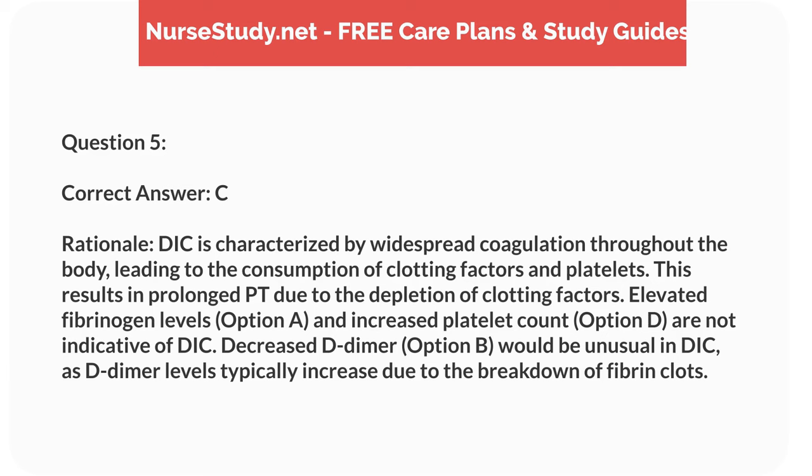Correct answer: c. Rationale: DIC is characterized by widespread coagulation throughout the body, leading to the consumption of clotting factors and platelets. This results in prolonged PT due to the depletion of clotting factors. Elevated fibrinogen levels, option A, and increased platelet count, option D, are not indicative of DIC. Decreased D-dimer, option B, would be unusual in DIC, as D-dimer levels typically increase due to the breakdown of fibrin clots.